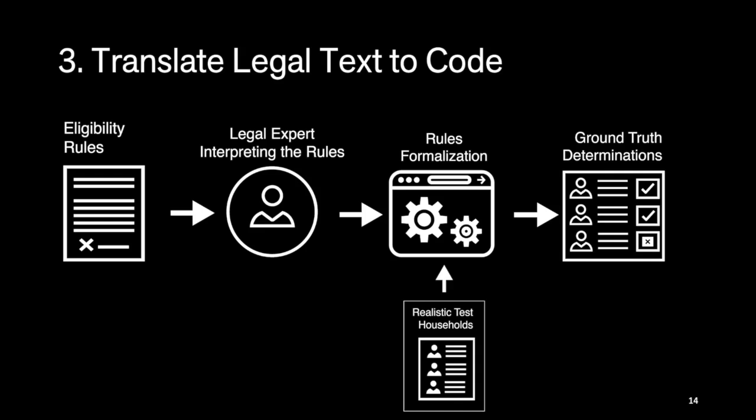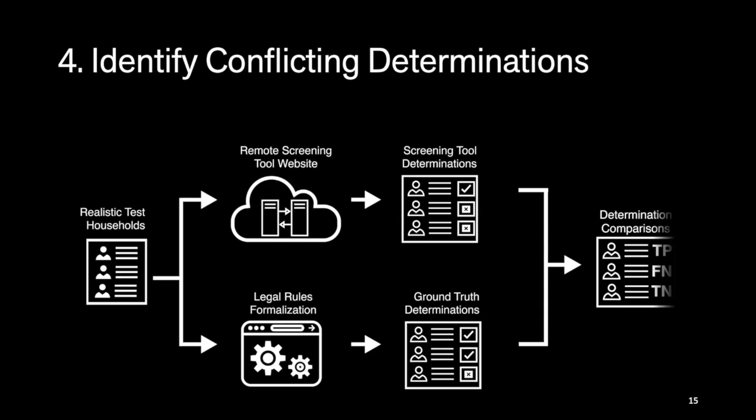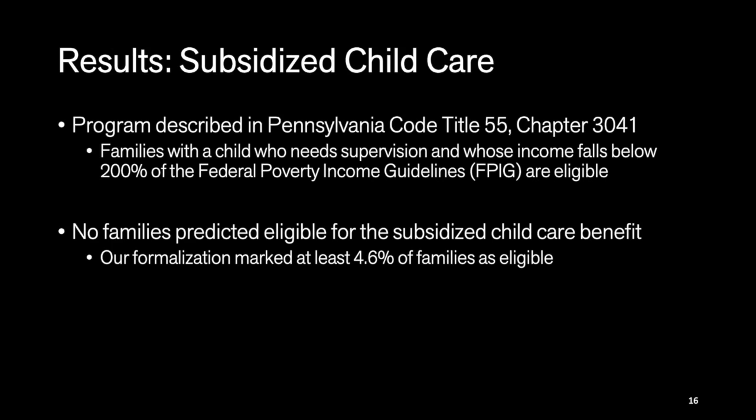Finally, we compare the determinations returned by the screening tool and those from our formal models. Any conflict we investigated as a potential error. I'll dig into the subsidized child care benefit results. This program is set out in a Pennsylvania statute: families with a child who need supervision and whose income falls below 200% of the federal poverty income guidelines are eligible. The screening tool predicted that zero families in our test set of 68,000 were eligible for the subsidized child care benefit, while our formalization marks at least 4.6% of families as eligible.